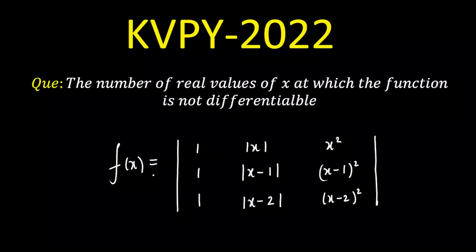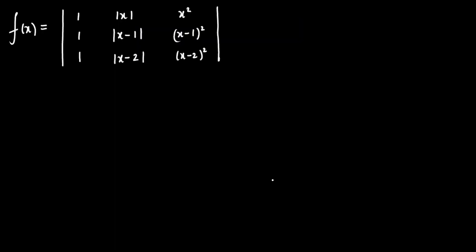Today, I am going to solve a question based on mixed topics — first is determinant, second is differentiability. These two are fused, and the function is given in the form of a determinant. The question is: find the number of values of x where the function is not differentiable.